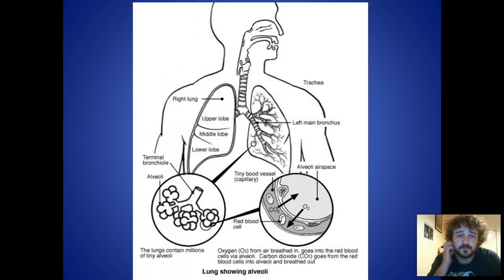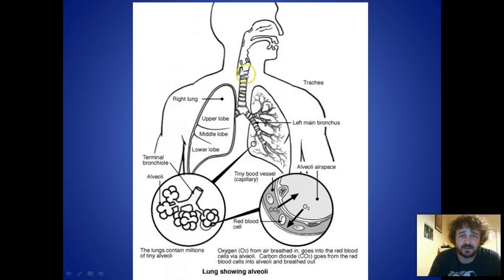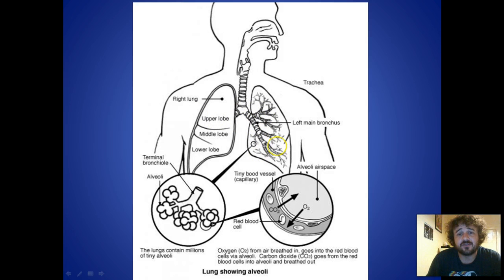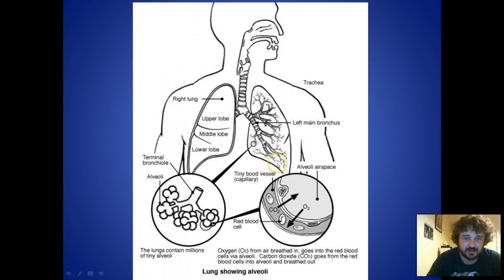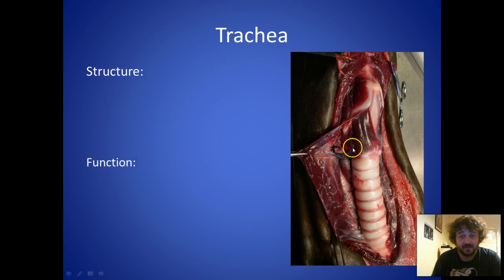Here is our basic structure. We're going to look at the trachea and how that goes down into the bronchi — bronchus is one, bronchi is two — and then it goes off into the alveoli, and the alveoli passes into the capillary system. We're going to start with the trachea. That is a canine trachea, not a human trachea, but that's what they look like.